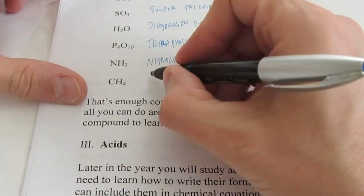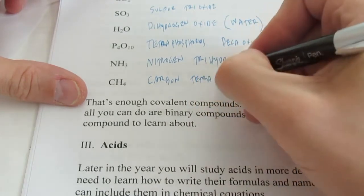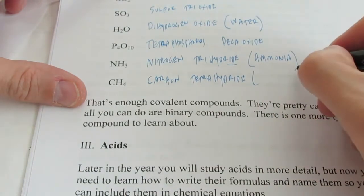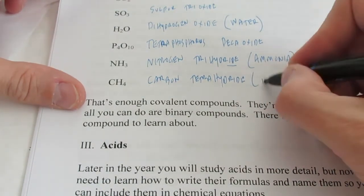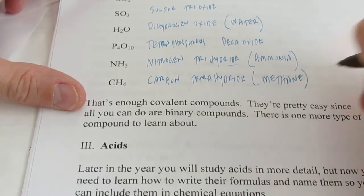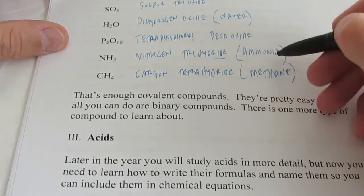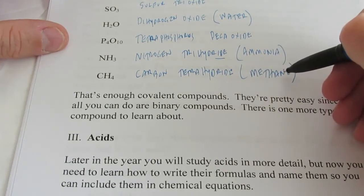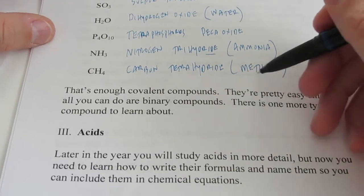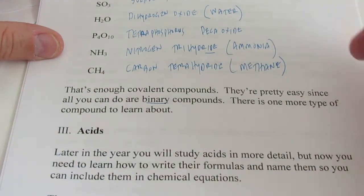All right. CH4 is carbon tetrahydride. And we will also use a common name for that, a more common name. It's actually a chemical name, but we usually call CH4 methane. All right. So there's some common names, kiddos, that you need to be familiar with. Now, that's enough for covalent compounds. They're pretty easy. Since all we're worrying about are binary compounds, it's really not that bad.